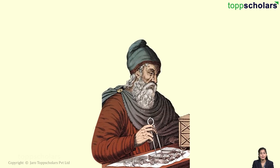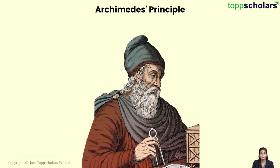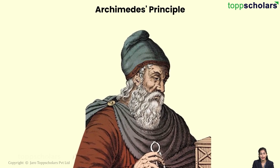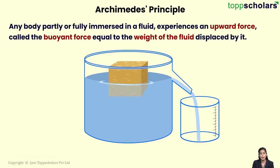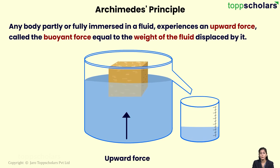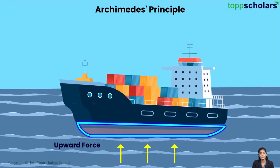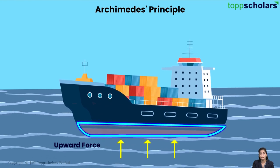Well, to answer this question, we need to understand Archimedes' principle. Archimedes' principle states that any body, partly or fully immersed in a fluid, experiences an upward force called the buoyant force, equal to the weight of the fluid displaced by it. This buoyant force is essential to make any object float.